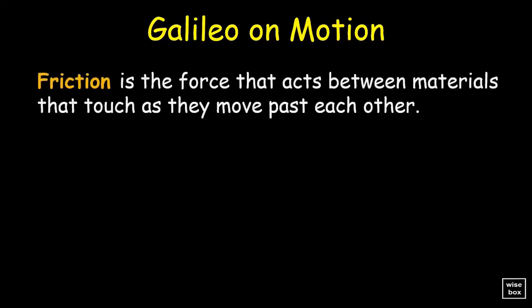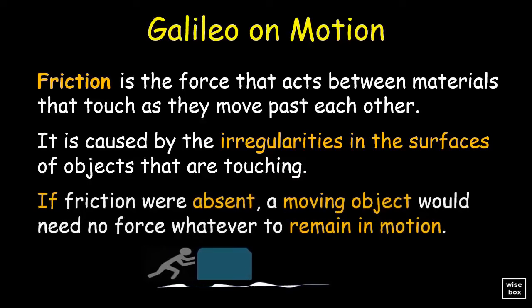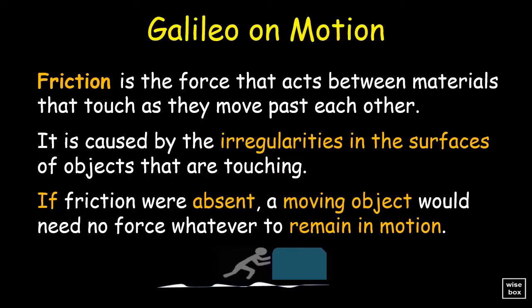Friction is the force that acts between materials that touch as they move past each other. Caused by the irregularities in the surfaces of objects that are touching. If absent, a moving object would need no force to remain in motion.